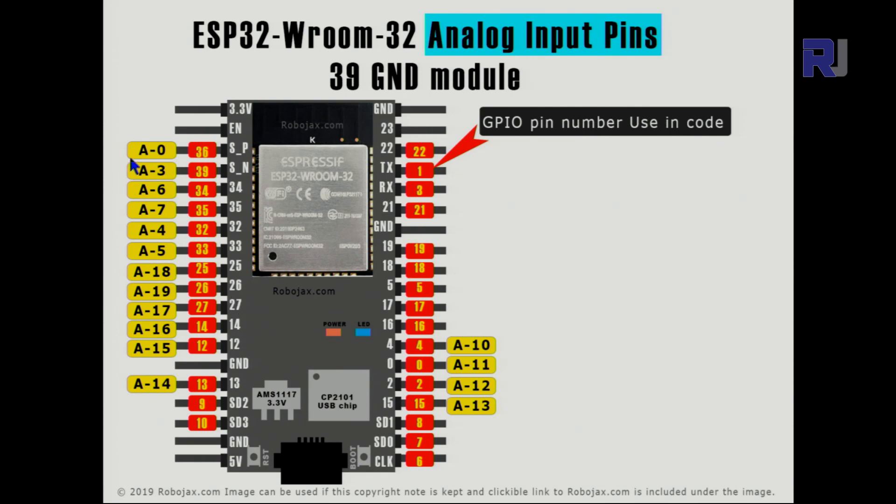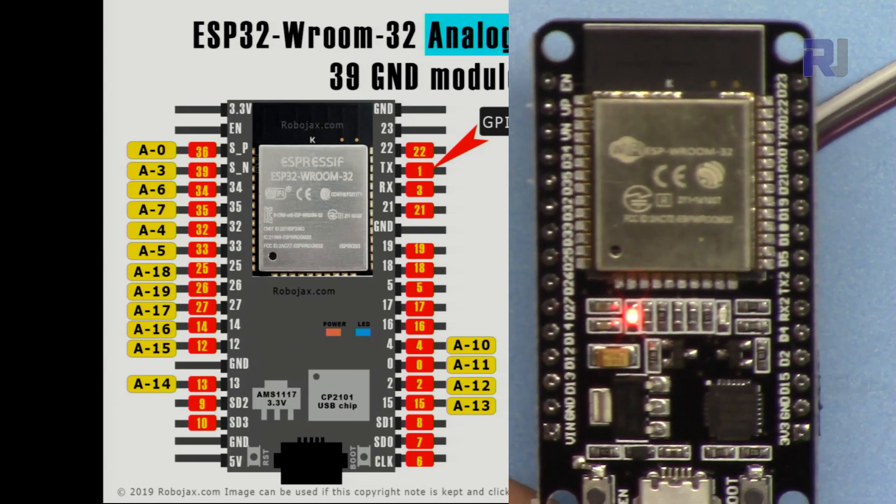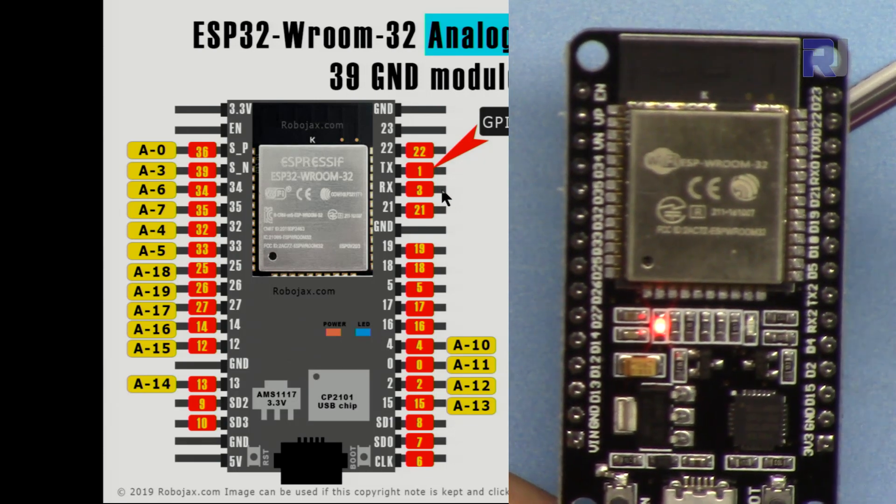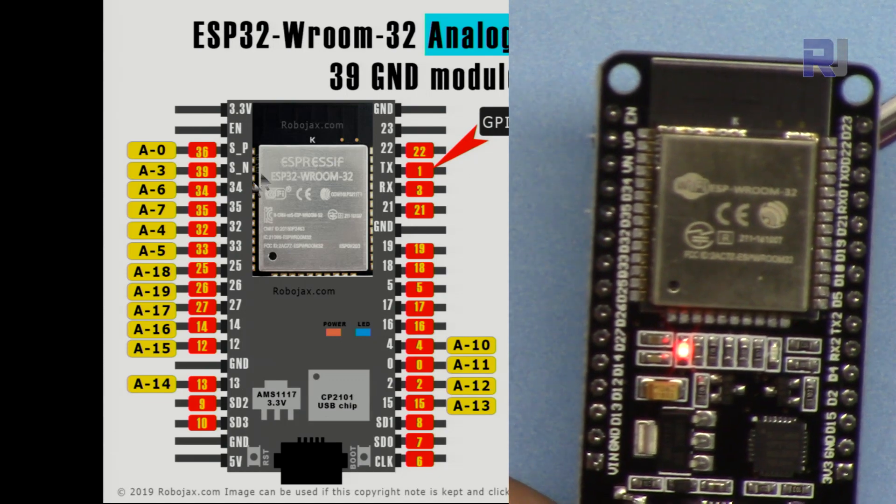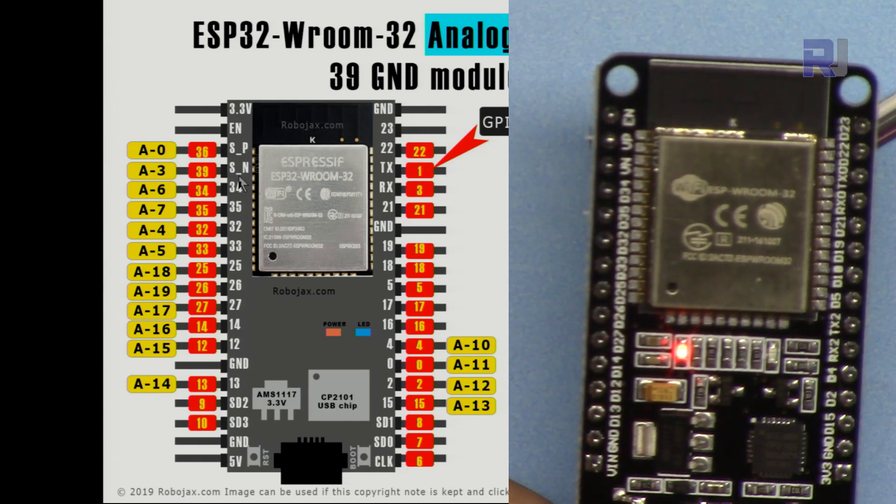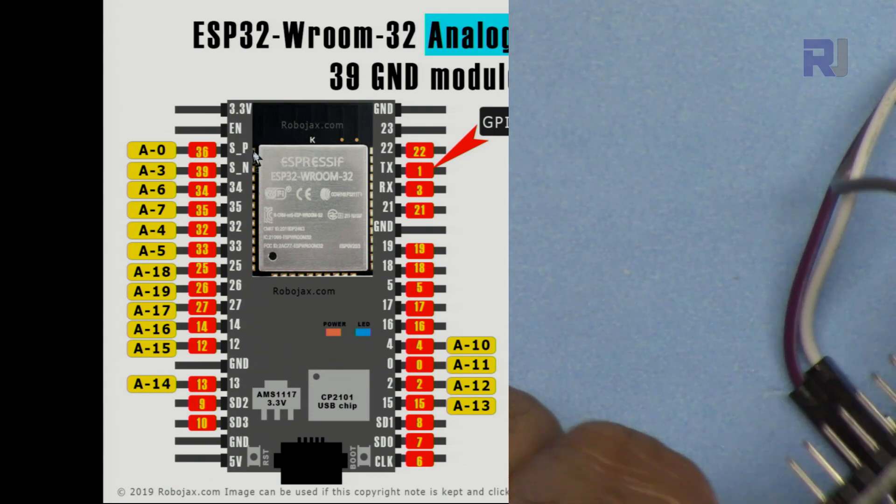I prepared this image so you can understand easily the analog pins. All the pins that are yellow are the analog input pins or analog to digital converter connected to them. Red are the GPIO pin numbers - these are the actual numbers of the module. These are the labels on the module, for example VP and VN.